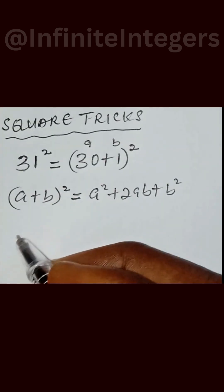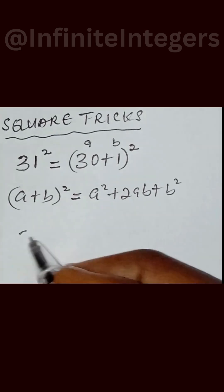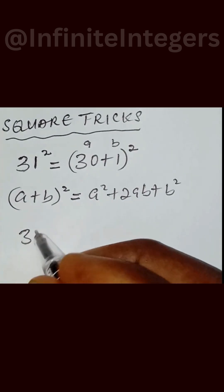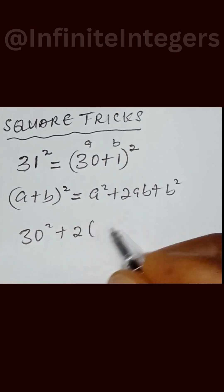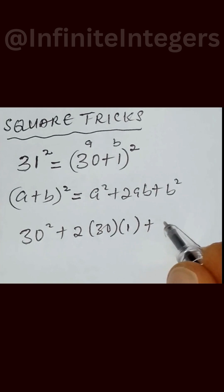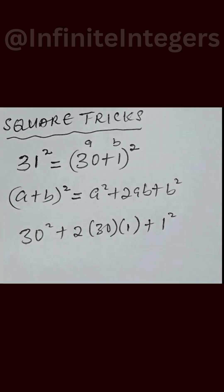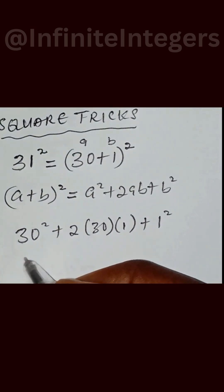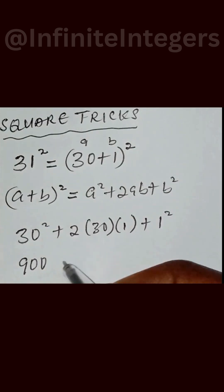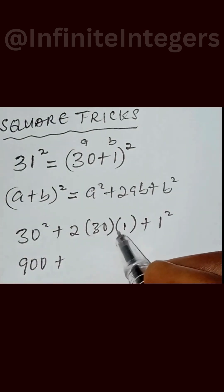You can now input that using this expansion. You now have 30² + 2 × 30 × 1 + 1². That will give you 30 × 30, which gives us 900. If you simplify this,